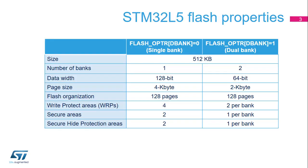The flash memory size is 512 kilobytes. The number of banks is 1 or 2 depending on the D-bank option bit. Note that read while write capability, or RWW, is only supported when the dual bank architecture is active.